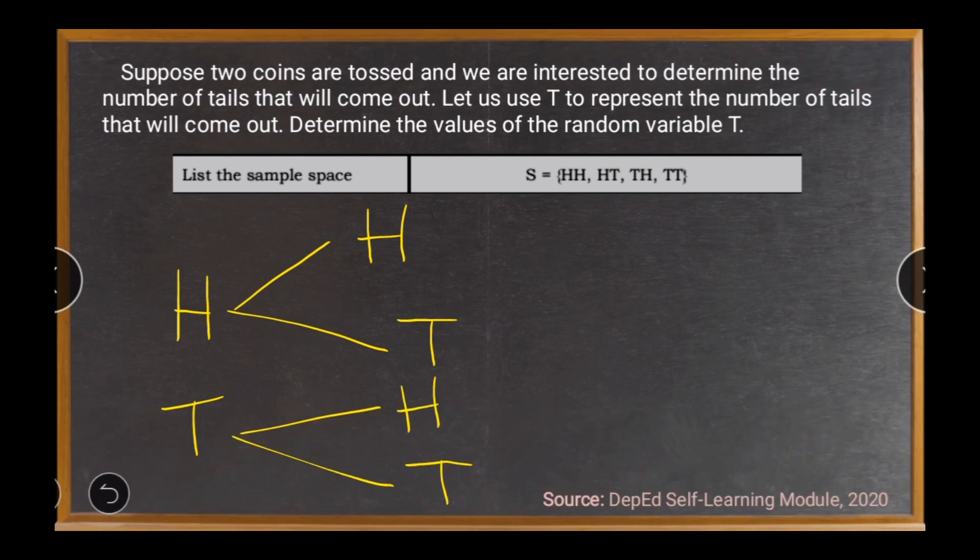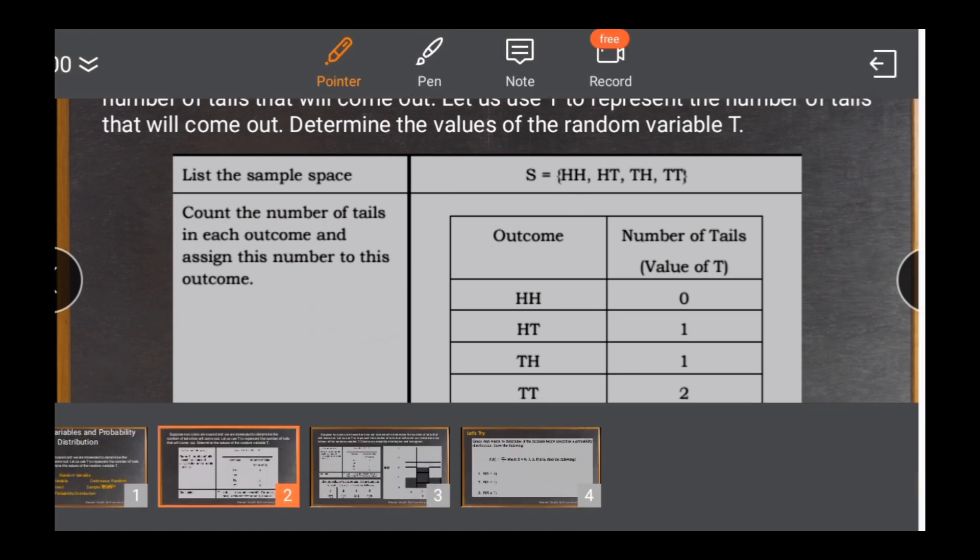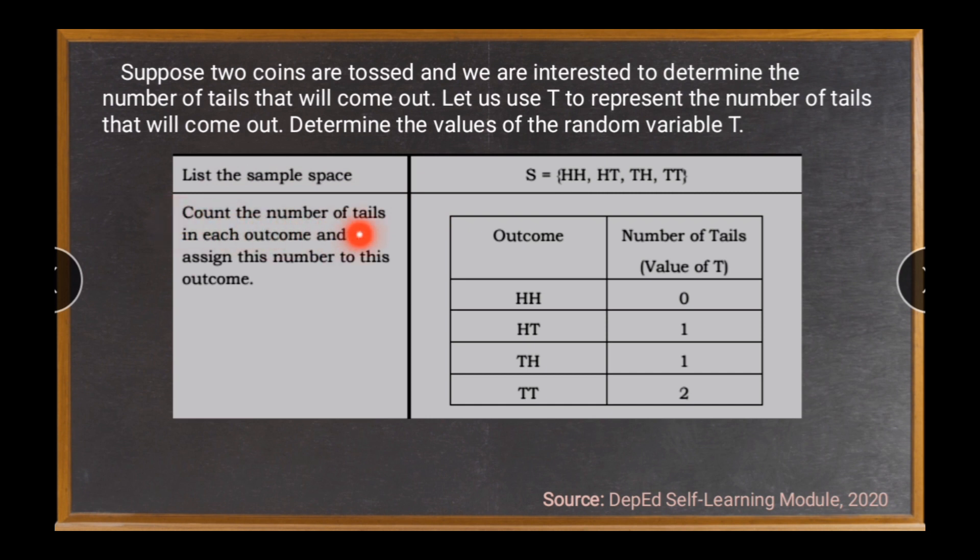So just remember that the sample space will always depend on the given. And you need to enumerate the values. And in here, we have the two coins which are tossed. We will proceed with another step to be considered. You are going to count the number of tails in each outcome and assign this number to this outcome.